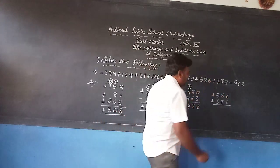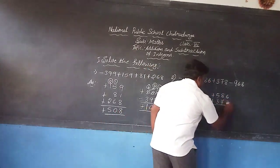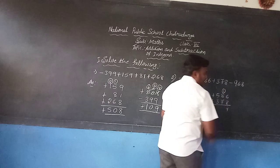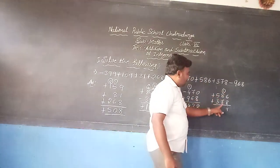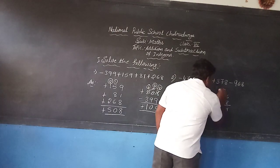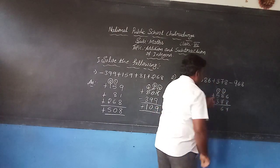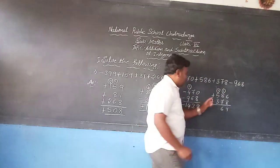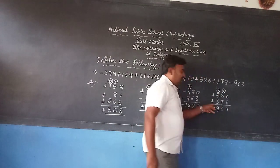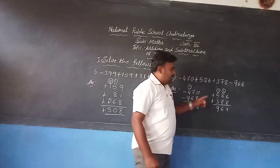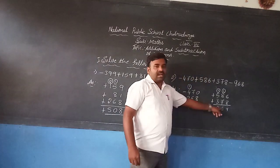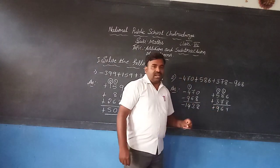Now go to the next pair of integers: plus 186 and plus 378. These two are in the same sign. 6 plus 8 is 14 — carry 1. 1 plus 8 is 9, 9 plus 7 is 16 — carry 1. 1 plus 5 is 6, 6 plus 3 is 9. After finding the sum, attach the same sign — it becomes plus 964.